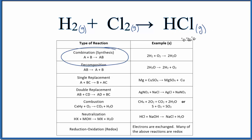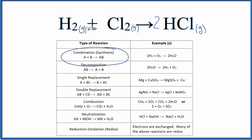If we want to balance the equation, we put a coefficient of 2 in front of the HCl. 2 times the 1 gives us 2 hydrogens, and we have 2 hydrogens on the left. This 2 applies to everything, so 2 times the 1 chlorine gives us 2 chlorines. So that's the balanced equation. The type of reaction for H2 plus Cl2 giving us HCl is a combination or synthesis reaction.